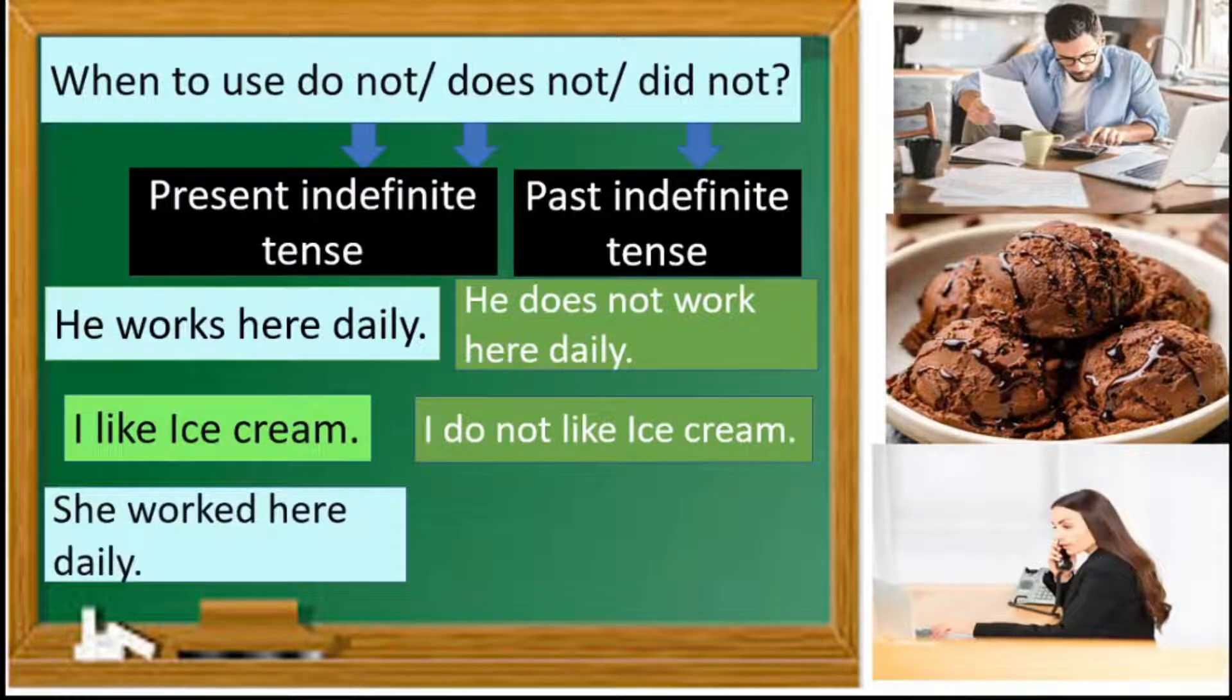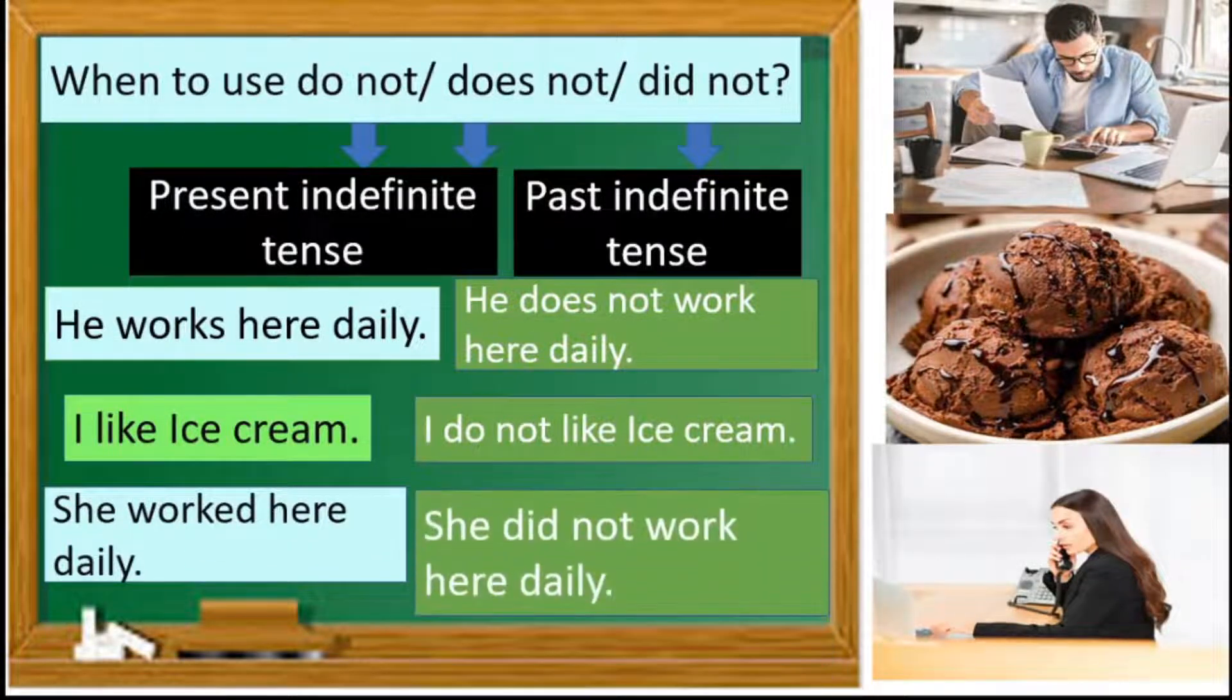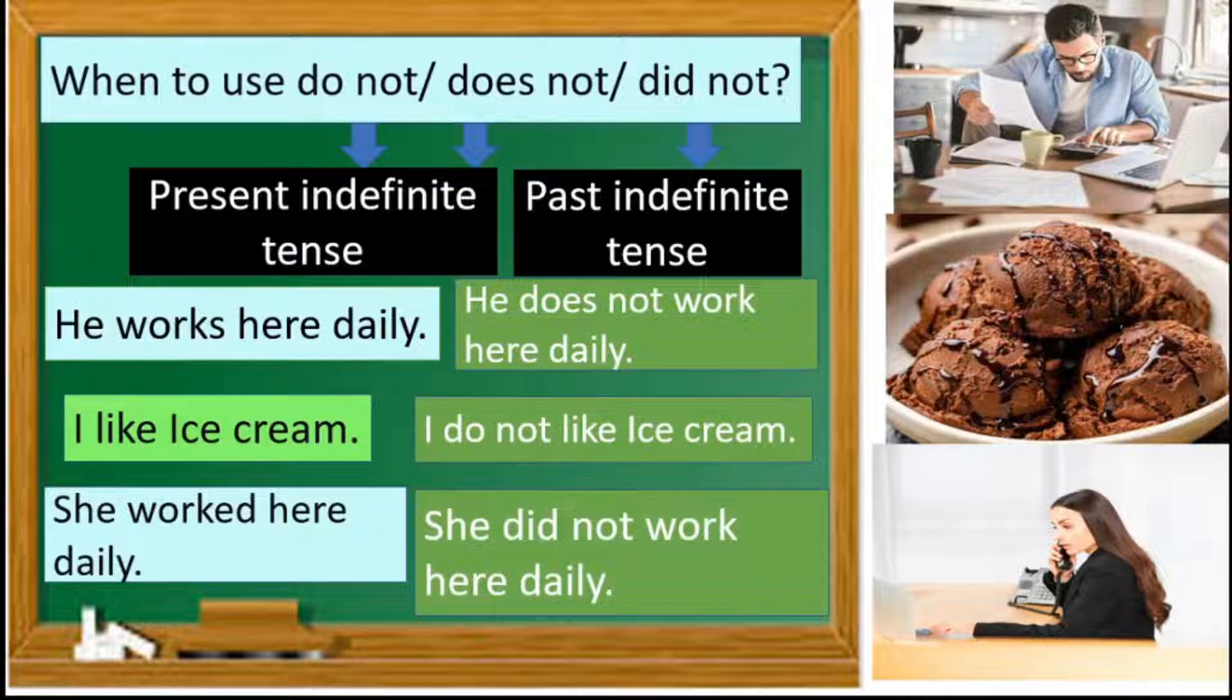Next example, she worked here daily. She did not work here daily. Children, why we use did not? Because this is in past indefinite tense. And how we can identify that it is in past indefinite tense? Because of V2. So this is in past indefinite tense. So we use did not and worked will change into work.